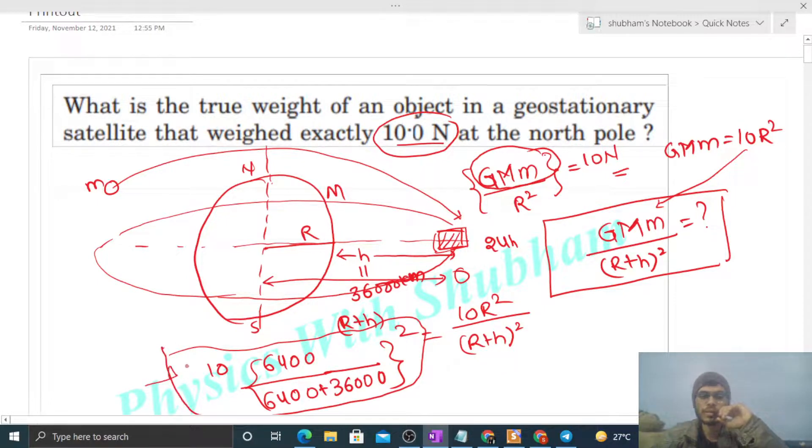If we talk about apparent weight, then that will be zero because this force is used to provide the centripetal acceleration. This means this force applied by the Earth, that is the true weight, is used to provide the centripetal acceleration. That's why the apparent weight will be zero.